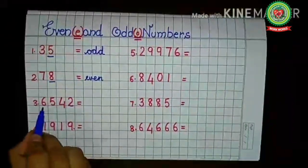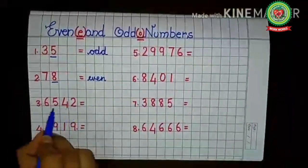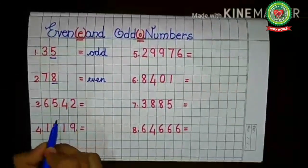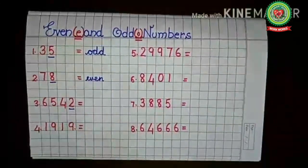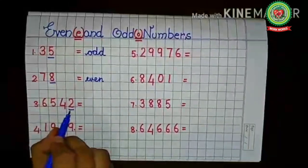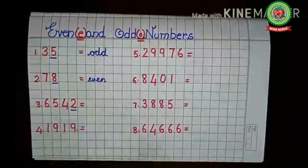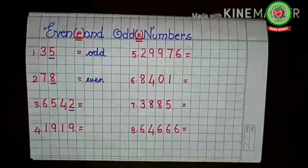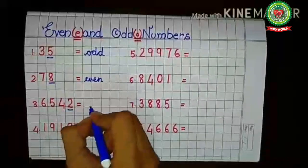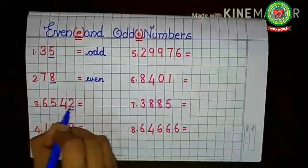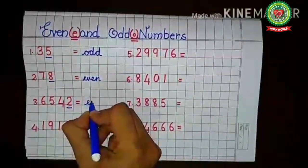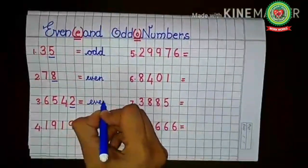Children, it does not matter whether the number is big or small — you only have to look at the last digit. For 6542, the last digit is two. Two comes in the table of two, so this full number 6542 is an even number.